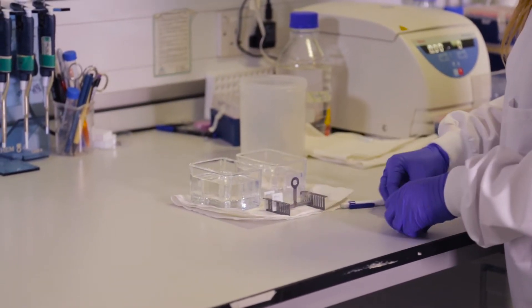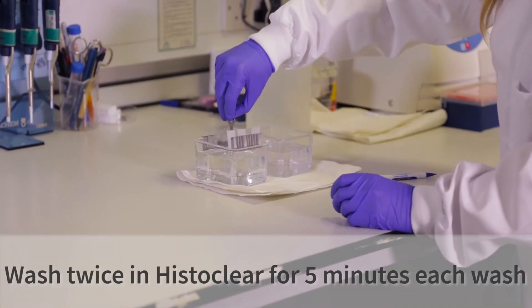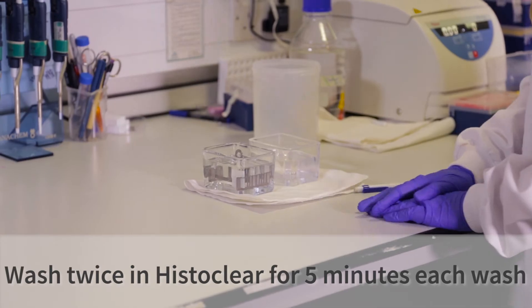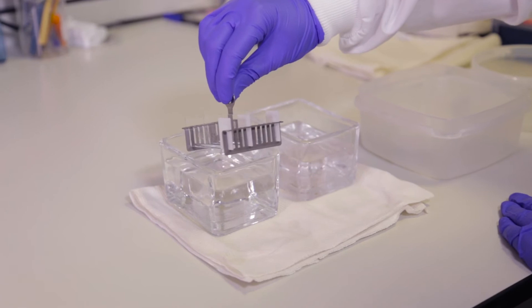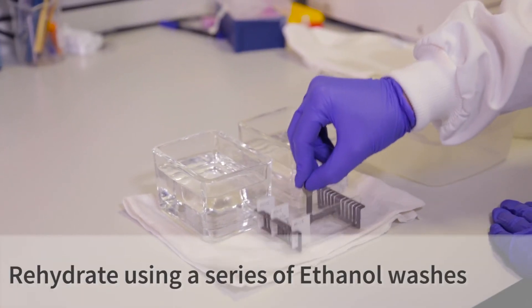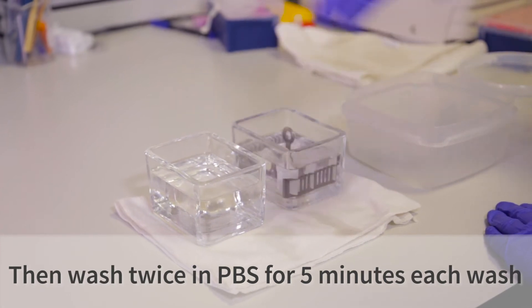We begin the procedure by clearing the paraffin from the sections by placing the slides in histoclear. All washes in this protocol are done using glass cuvettes and a slide rack. After two histoclear washes, we then begin an ethanol hydration series, going from 100% ethanol down to water through a series of washes.